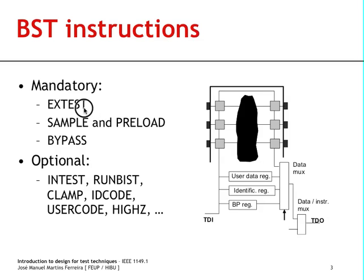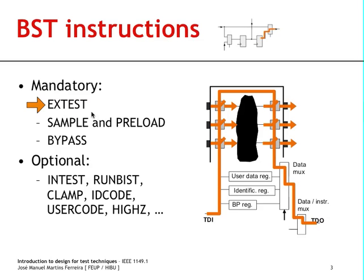The first instruction we will look at is called external test, and this is the main boundary scan instruction used for board testing. External test selects the boundary scan register as the path between TDI and TDO, and the boundary scan cells are placed in an operating mode that isolates the pins from the core logic, so the output multiplexer will be connected as shown here when external test is loaded into the instruction register.